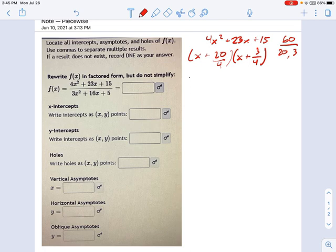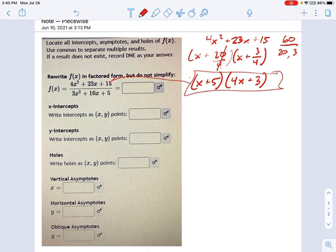So that makes this x plus 20 over 4, and x plus 3 over 4. Now 20 over 4 simplifies, that's just x plus 5. But 3 over 4 does not simplify. So this becomes, in our shortcut method of factoring, 4x plus 3. And if you compare x plus 5 times 4x plus 3 to that term right there, you'll see that this is the correct factoring.